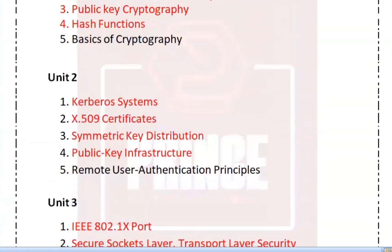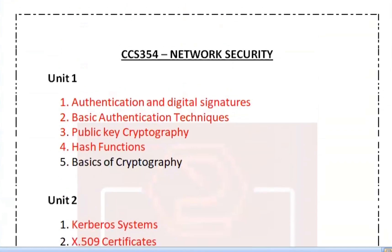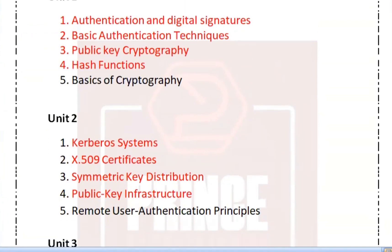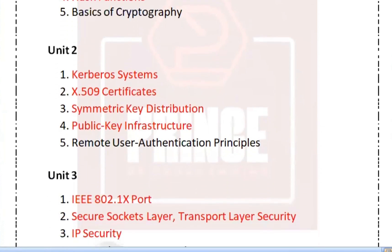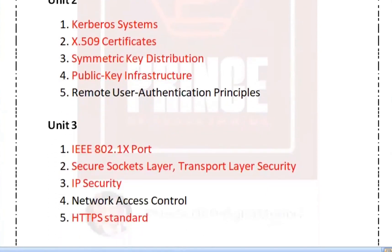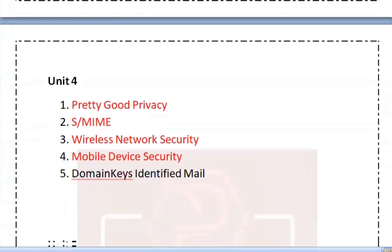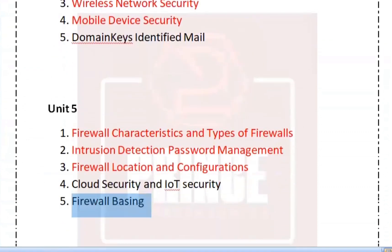If you want to highlight everything in red color, simply check the big questions. In Unit 1: Authentication and Digital Signatures, Basic Authentication Techniques, and Public Key Cryptography are very important. In Unit 2, Unit 3, Unit 4, and Unit 5 — the first 3 questions in each unit are the priority.